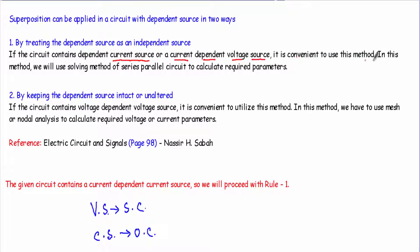In this first method, we use the series-parallel circuit solving approach to calculate the required voltage or current parameters. The second method is by keeping the dependent source intact or unaltered — I do not treat it as an independent source, and I do not replace it with an open or short circuit, nor keep it active separately. This second method is used when the circuit contains a voltage dependent voltage source, and we use mesh or nodal analysis to find the parameters.